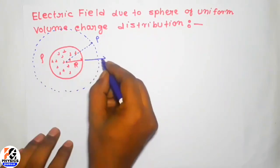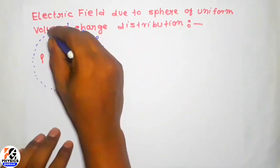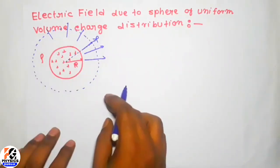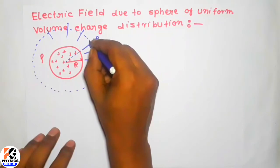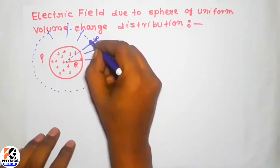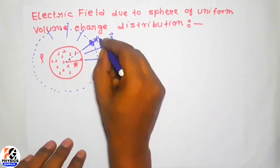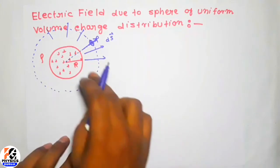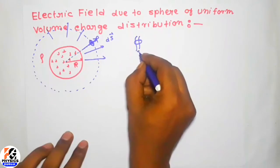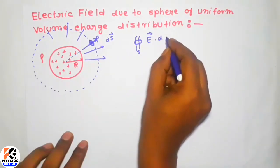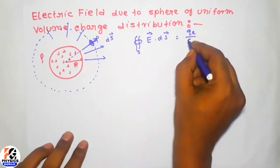As the charge distribution has spherical symmetry, the electric field will be radially outward and always perpendicular to the Gaussian surface at every point. Let us take a small area dS at point P where we have to find the electric field. The direction of dS and the direction of electric field will be the same. So we can apply Gauss's law: E dot dS equals Q enclosed over epsilon-zero.